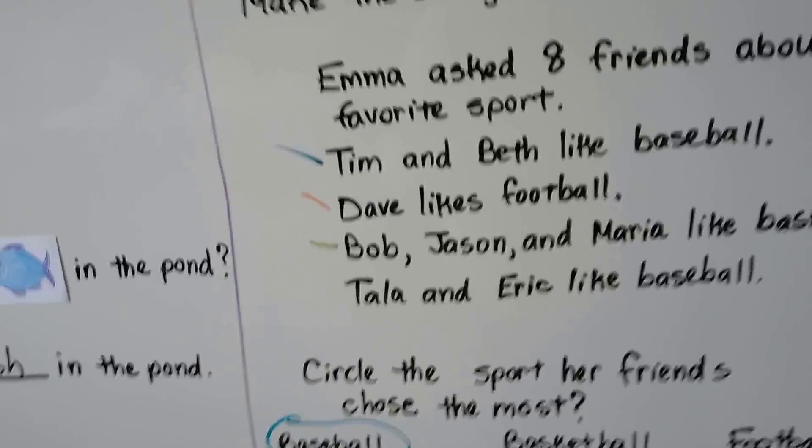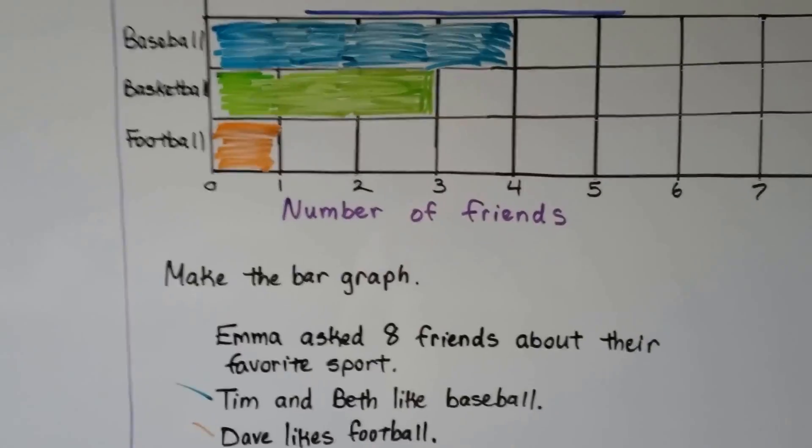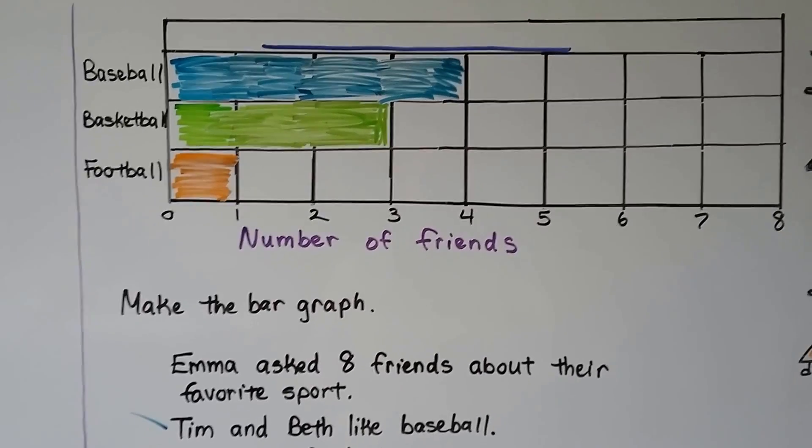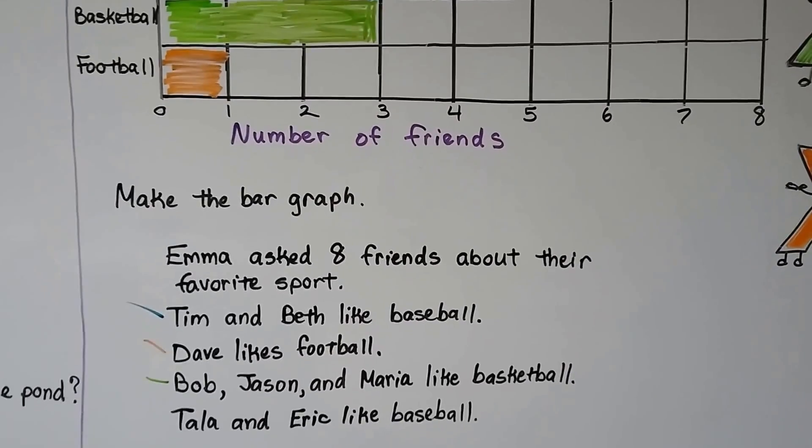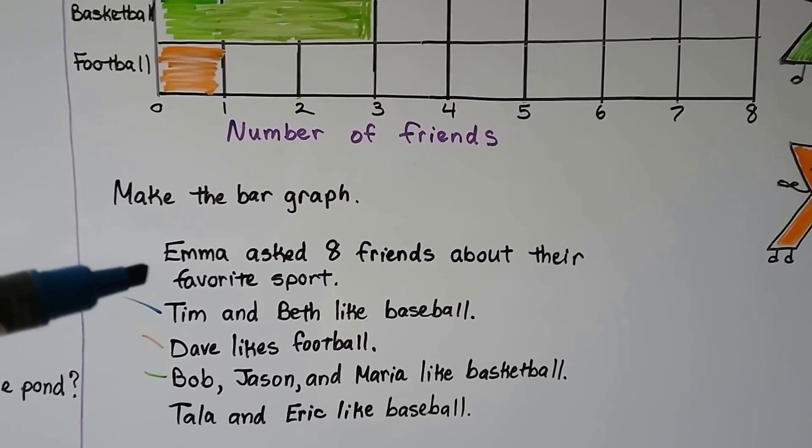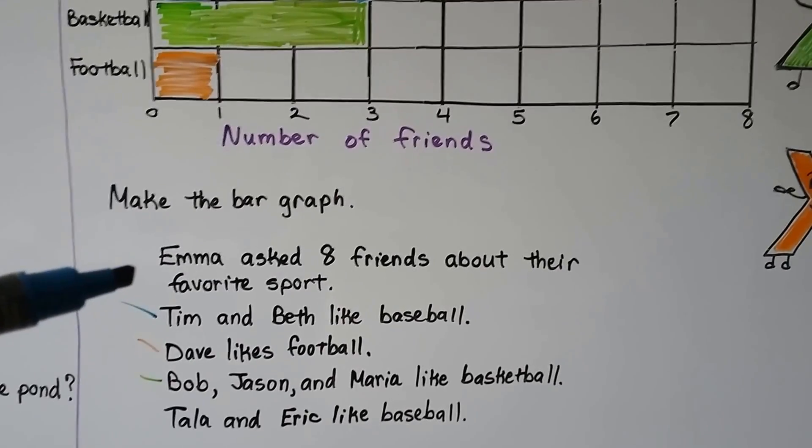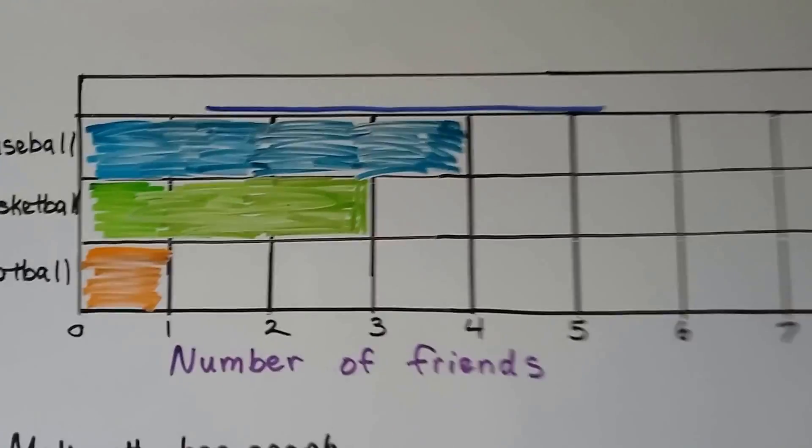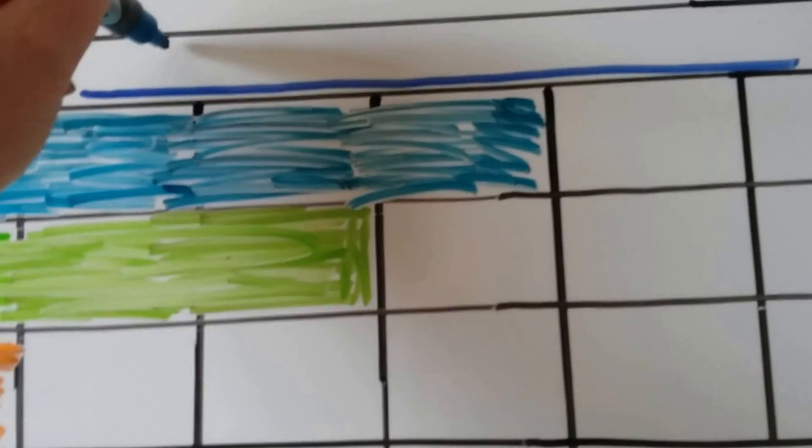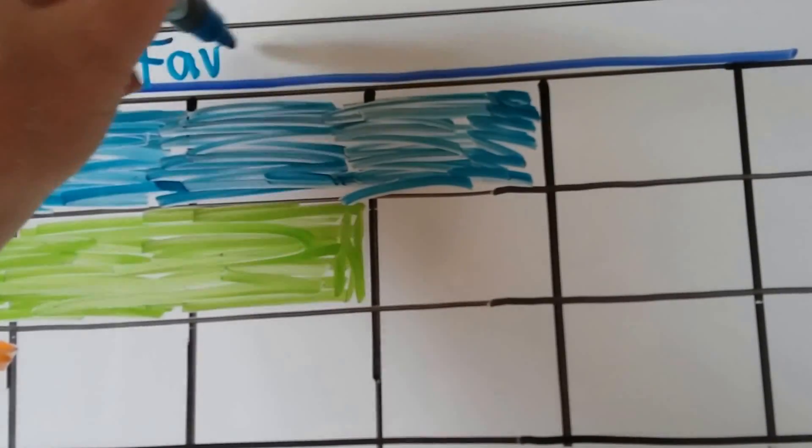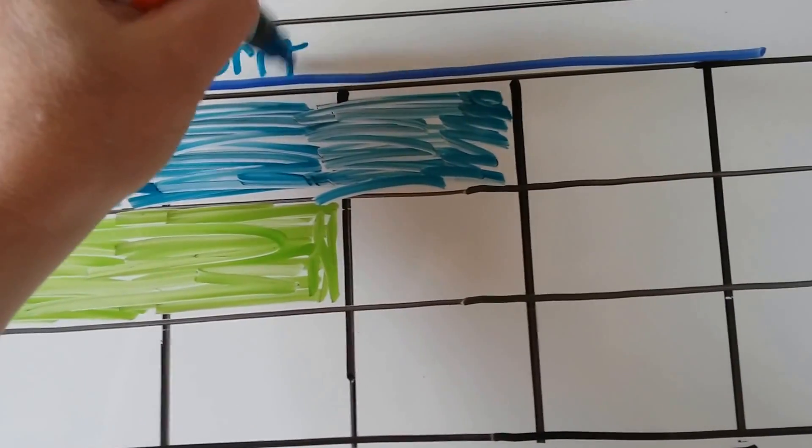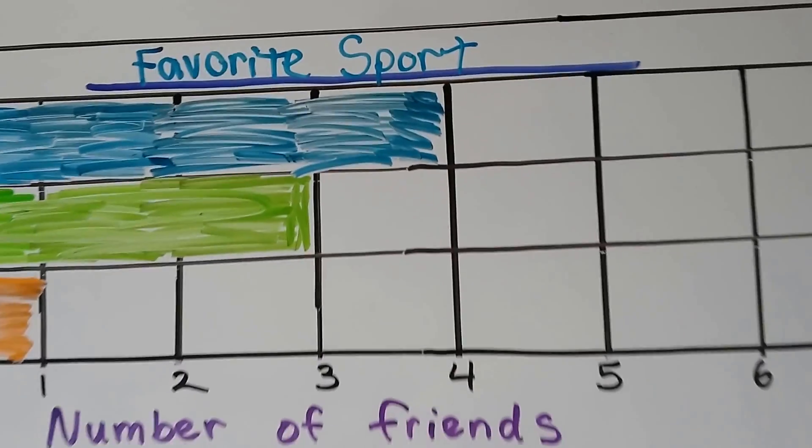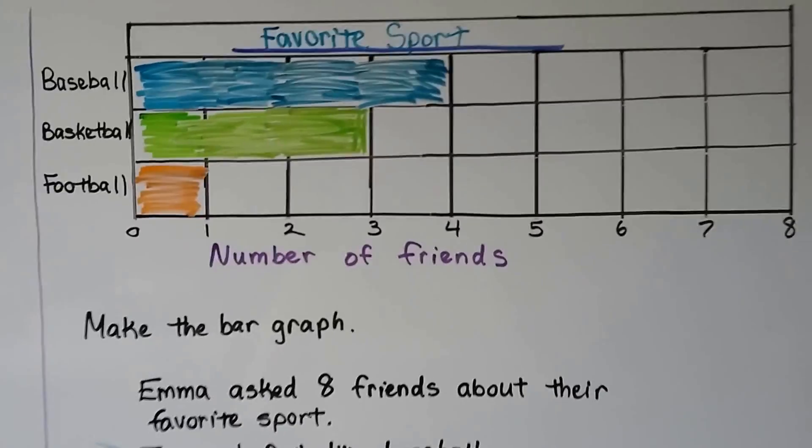And we still need to make a title for our graph. Can you think of a good title for this graph? What was it looking for? What is it talking about? It's about their favorite sport. So that would be a good title. Favorite sport.